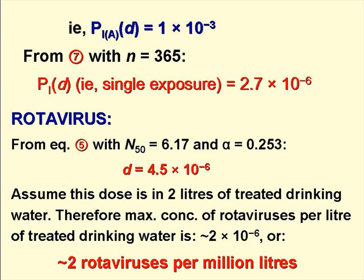So we can now use equation 5, with N50 equals 6.17 and alpha equals 0.253 for rotavirus, to calculate the single rotavirus dose D, and this works out as 4.5 times 10 to the minus 6. Suppose that this dose D is in 2 litres of water. Assuming that people drink 2 litres of water a day, the maximum permissible concentration of rotaviruses in drinking water is around 2 times 10 to the minus 6 per litre – that's roughly 2 rotaviruses per million litres of treated drinking water.